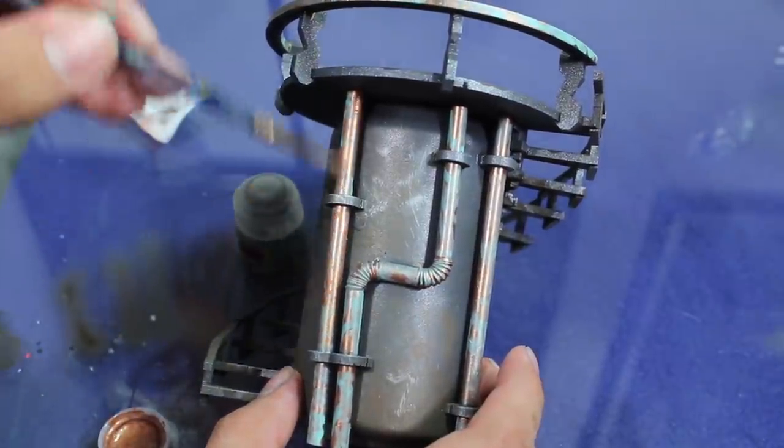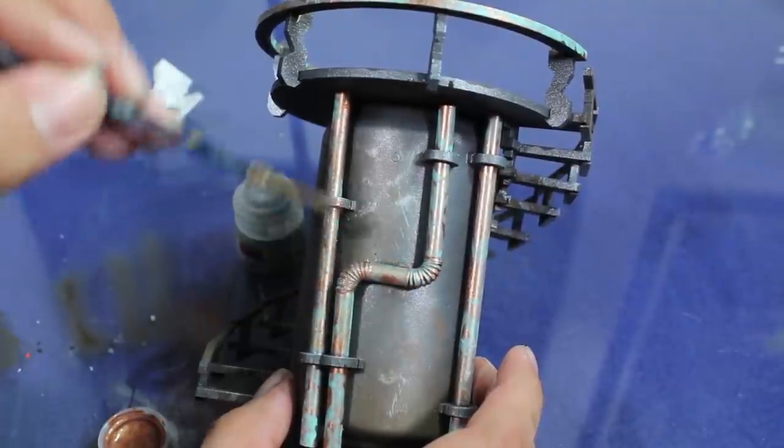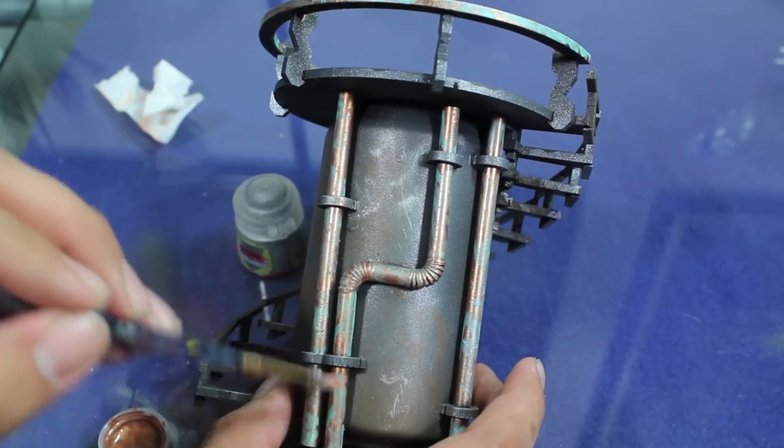Once that was done, I watered down a little Hashut Copper and went back over the pipes to help knock down the color of the verdigris and bring together all the colors in the model.